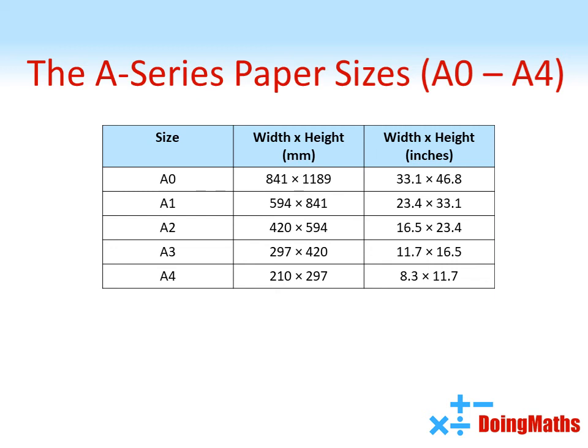We can now use our A0 dimensions, and by halving the longer side each time, we'll get progressively through our A series paper sizes. If we carry on doing this, we'll get to A4 and the measurements that we set at the beginning of 210 millimeters by 297 millimeters.